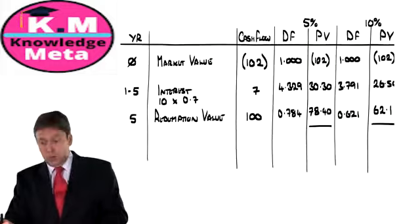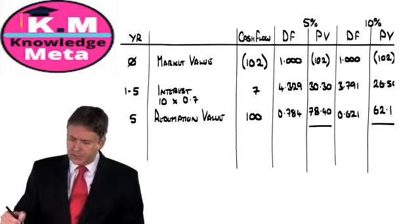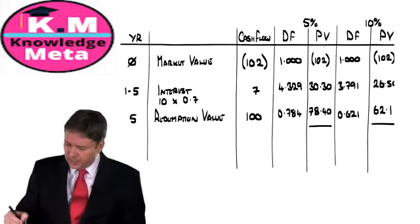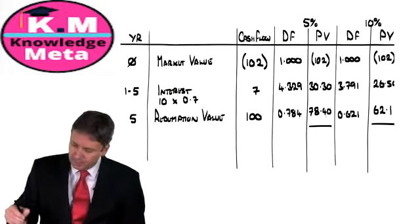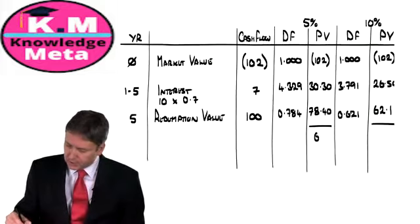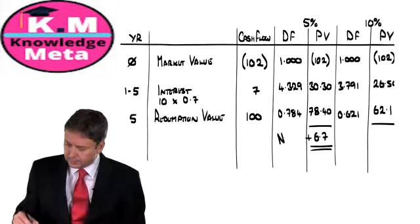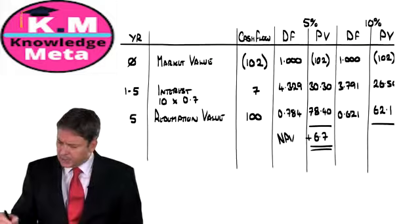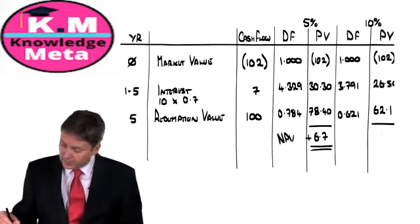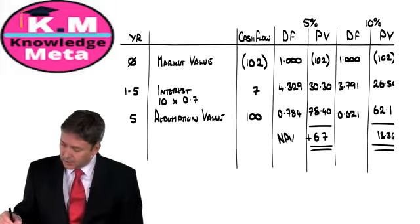Looking at the present values at 5%: netting them all off, we get 108.70 minus 102, which comes to +6.7 — positive. At 10%: taking 88.64 away from 102, we get −13.36 — negative. We've got what we want: a positive and a negative NPV.